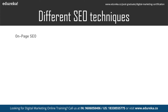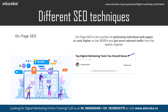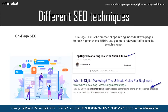On-page SEO is the practice of optimizing individual web pages to rank higher on the SERPs and get more relevant traffic from search engines. As the name suggests, it optimizes the content that is present on the page — these are things like title tags, meta tags, meta description, keyword density, URL of the page, and so on.